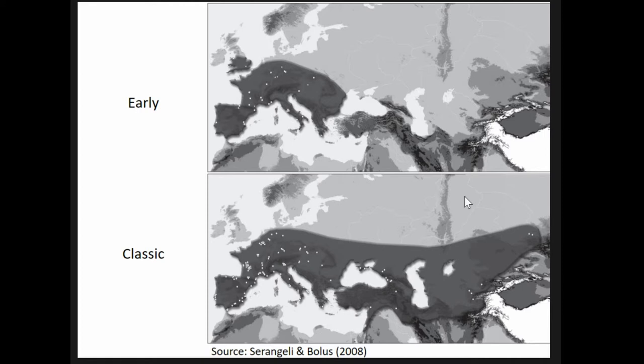If you look at the map — that is probably a little bit old, maybe a little bit new data — if you compare so-called early and classic Neanderthals, where the early Neanderthals are those older than 130,000 years and the classic ones are the younger Neanderthals, we see there is some difference in the distribution of the sites, maybe because of preservation bias, but maybe also because of changes in land use and mobility of the Neanderthals.